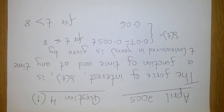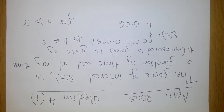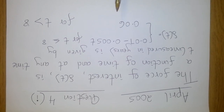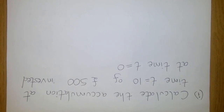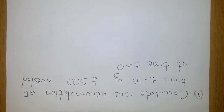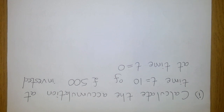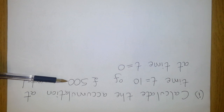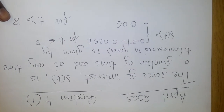For any time greater than 8 — that is, from year 8 onwards through year 9 and year 10 — the force of interest is constant and is given by 0.06. The question asks us to calculate the accumulation at time t equals 10 of £500 invested at time t equals 0, so we need to accumulate £500 over 10 years.